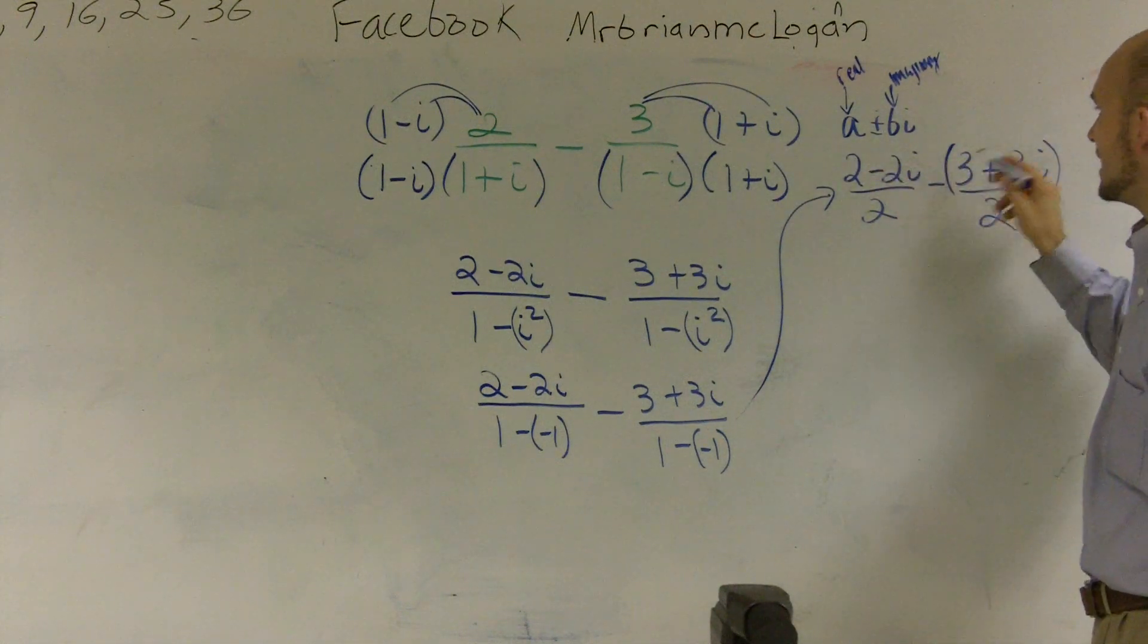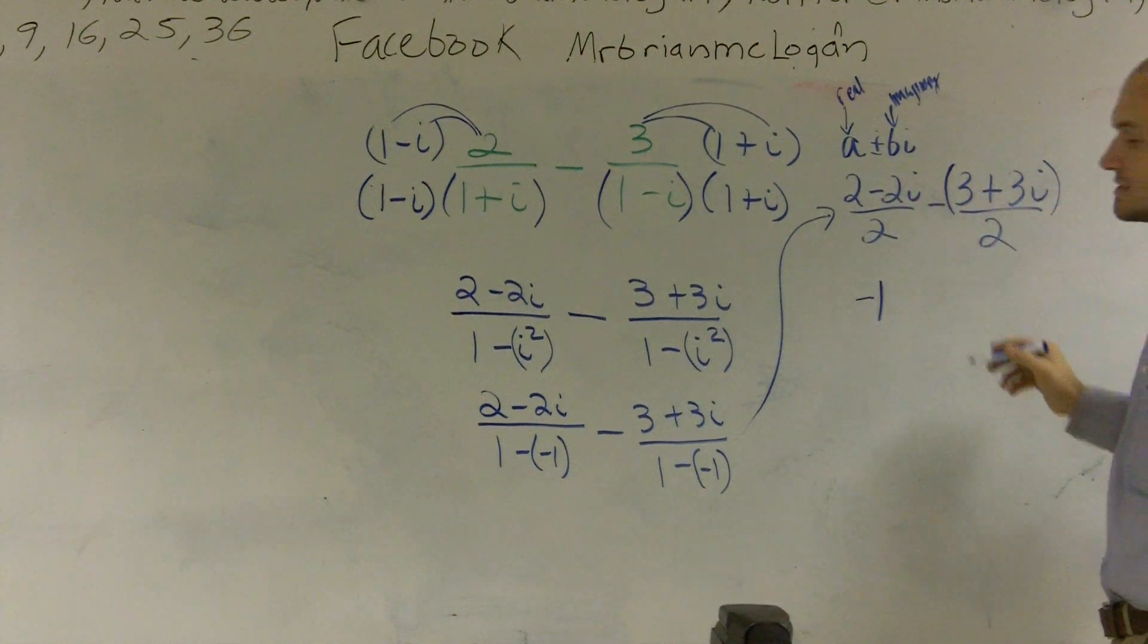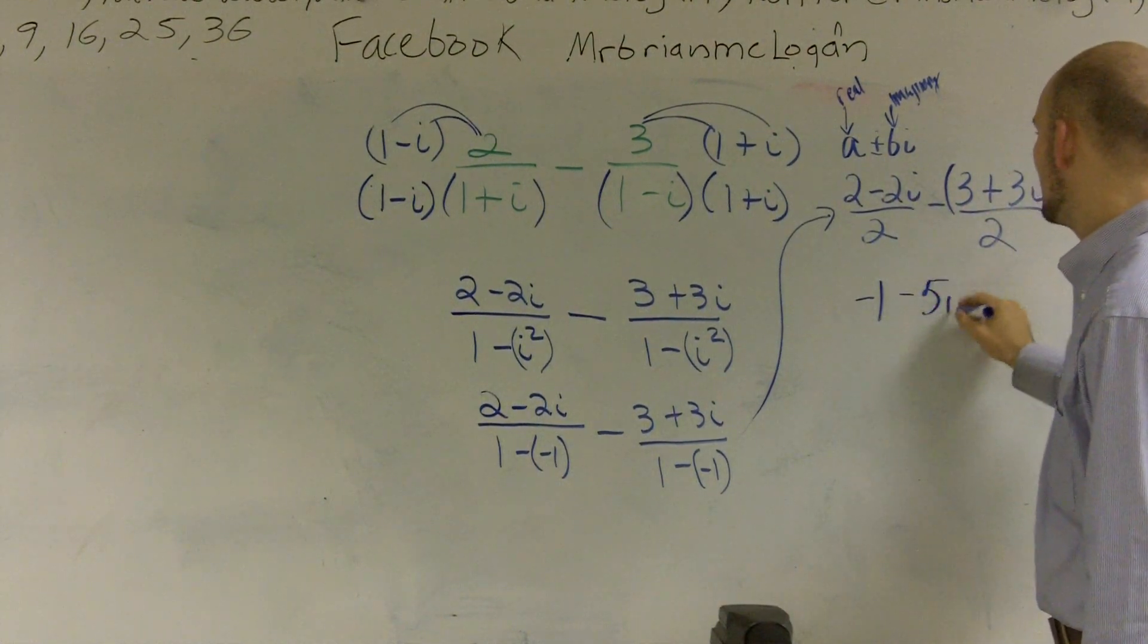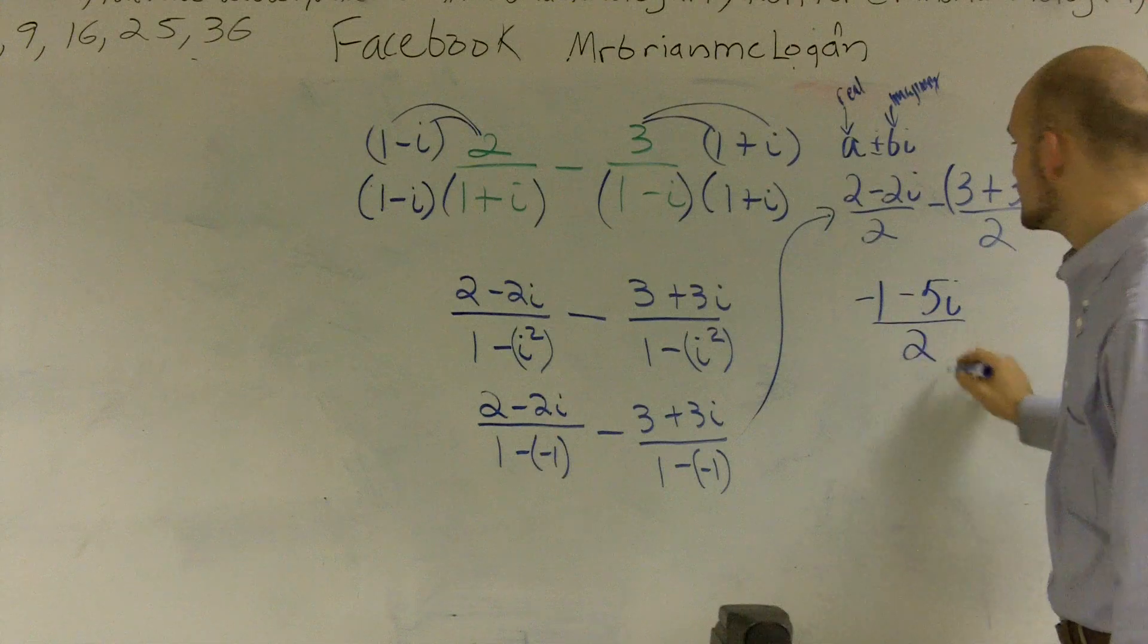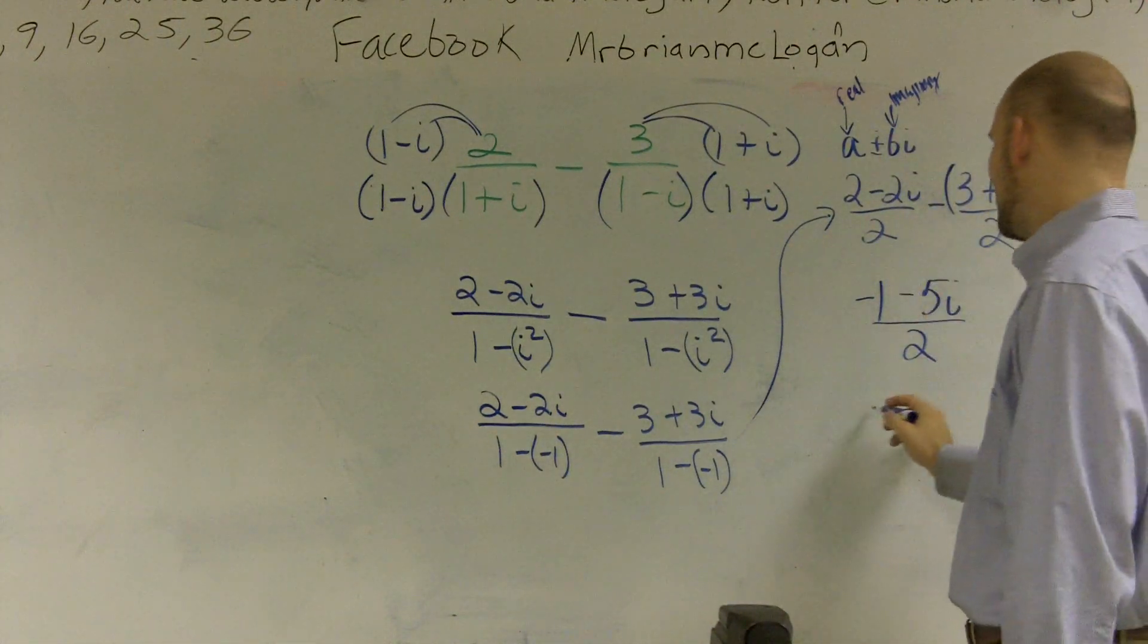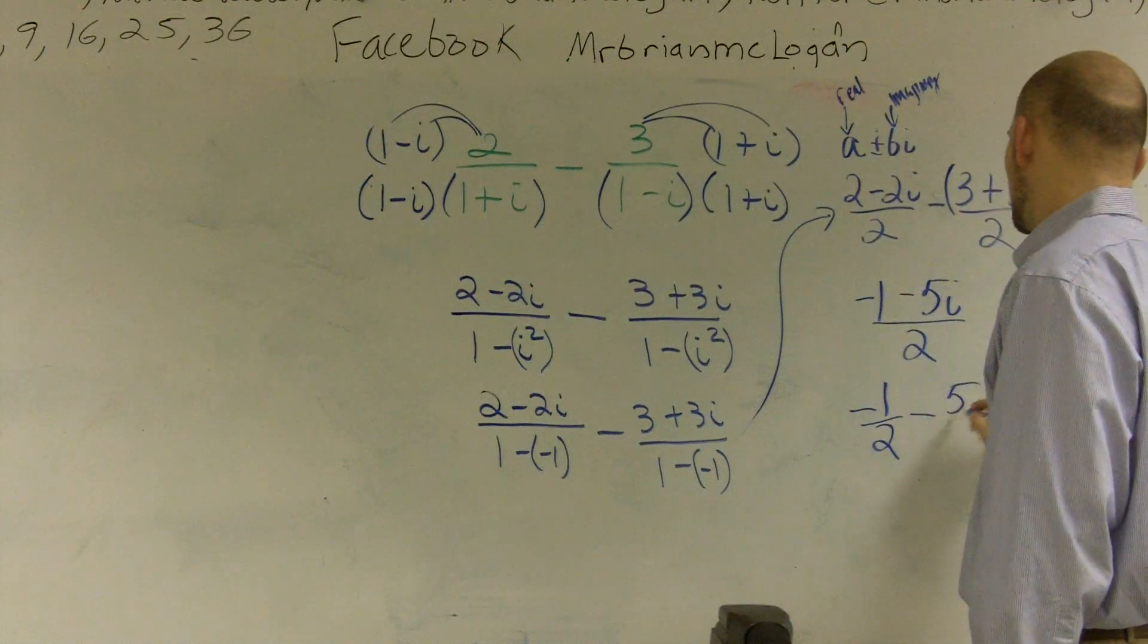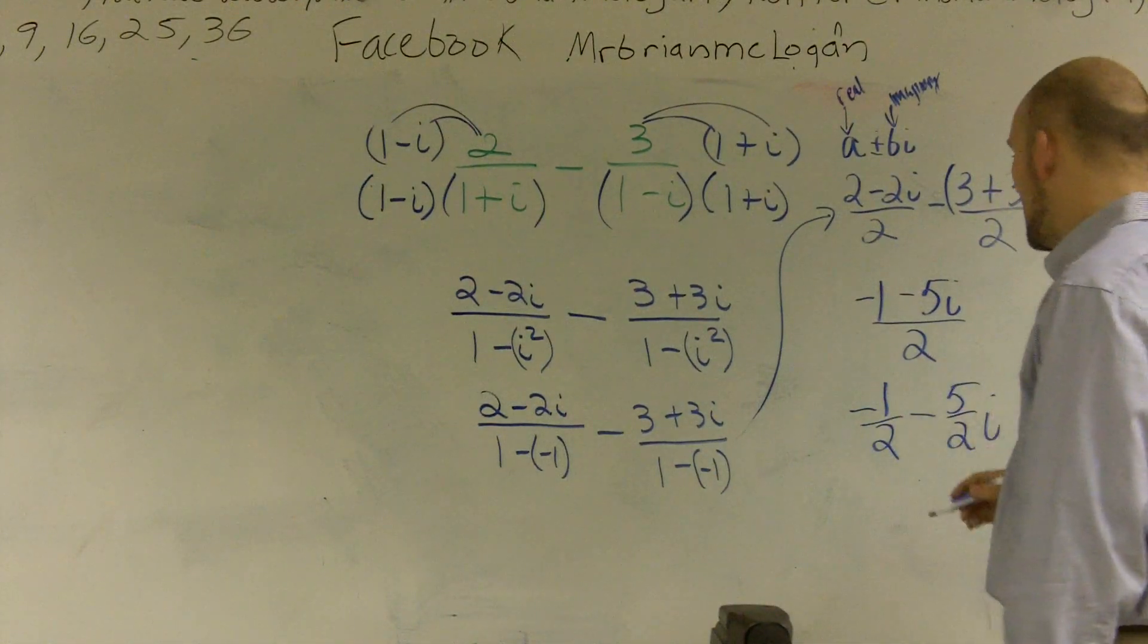So therefore, 2 minus 3 gives me a negative 1. And the negative 2 minus 3 gives me a negative 5i all over 2. And then to keep this in a standard form, I'm going to divide that 2 into both of them. So it's a negative 1 half minus 5 halves i.